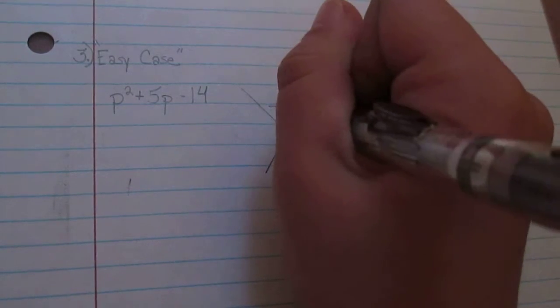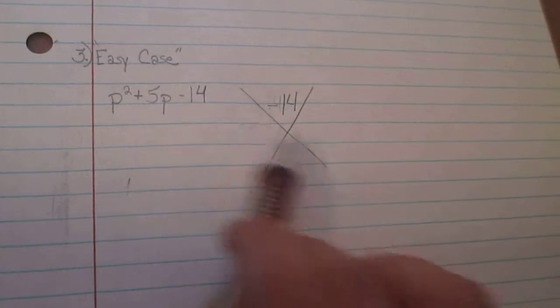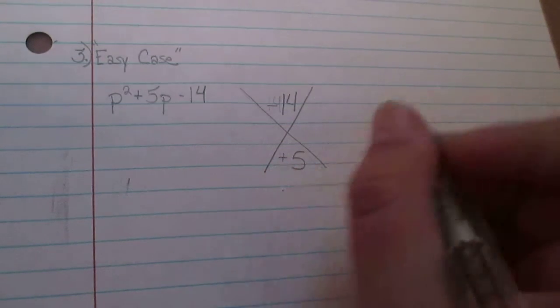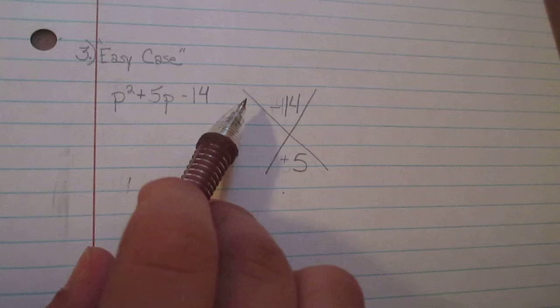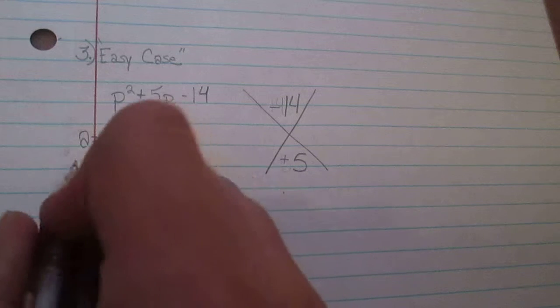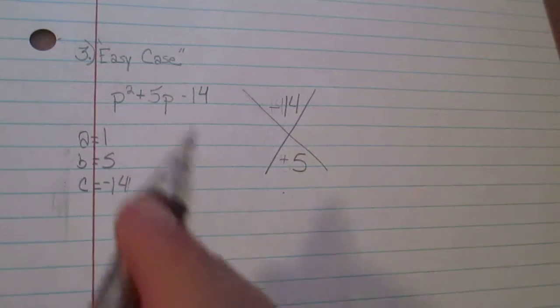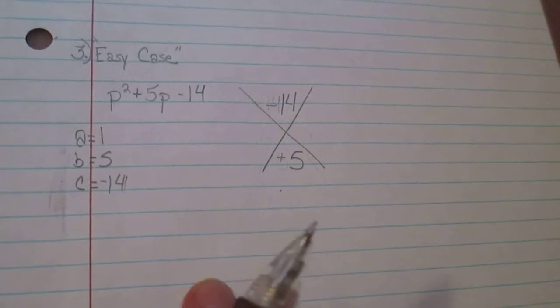Now for the easy case expression, with this expression p² + 5p - 14, I'm going to use a diamond method in this case. So -14 is going to be over here on this part of the diamond and then positive 5. And the way that I got these two numbers is because a = 1 in this expression, b = 5, and then c = -14. So that's how I got those numbers from this expression.